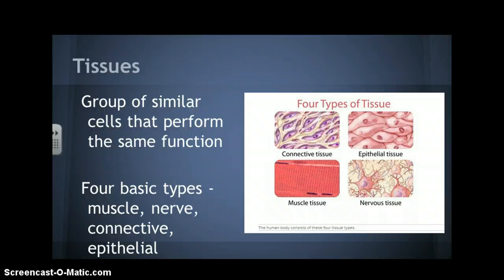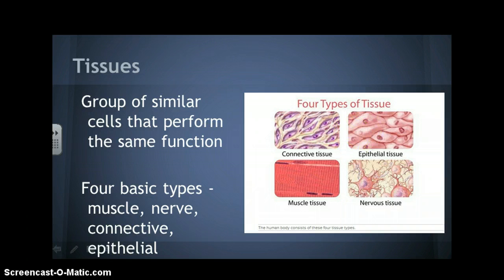Cells get together and form tissues. Tissues are groups of similar cells that perform the same function. There are four different types of tissues: connective tissue, epithelial tissue, muscle tissue, and nervous tissue. And there's a picture for you to kind of see what each of those look like as well.